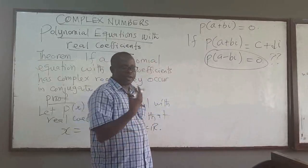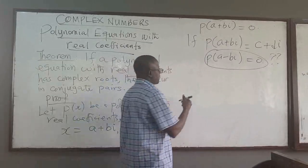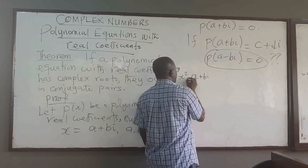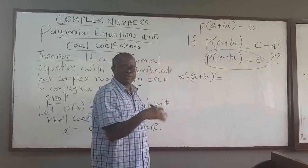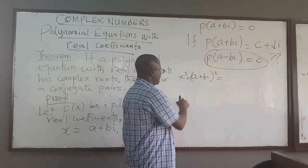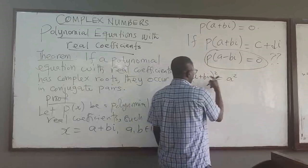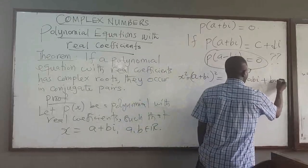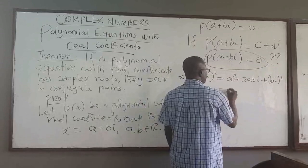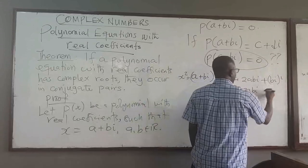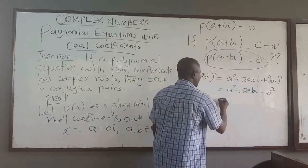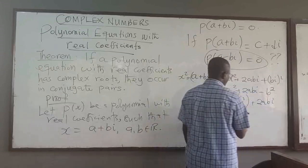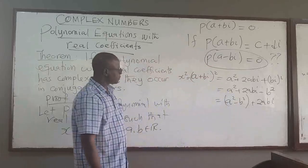Let's look at some examples to understand what comes next. If we square a complex number (a plus bi) squared, we get a squared plus 2abi plus b squared times i squared, which simplifies to a squared minus b squared plus 2abi. So we have a clear real part and imaginary part.